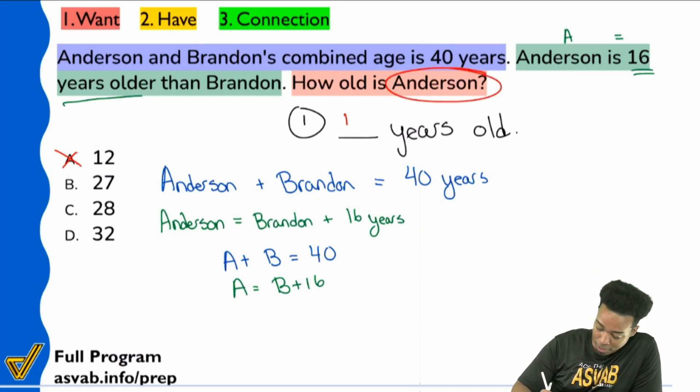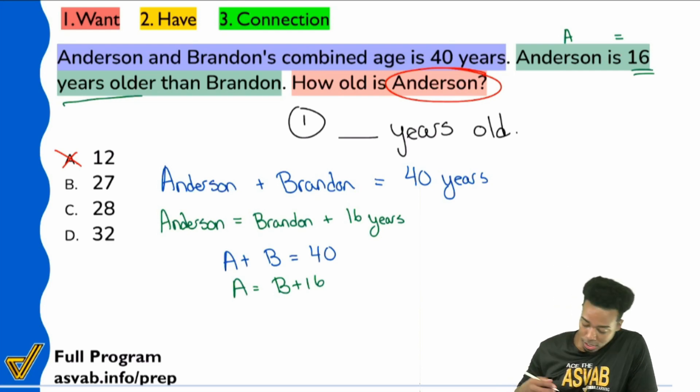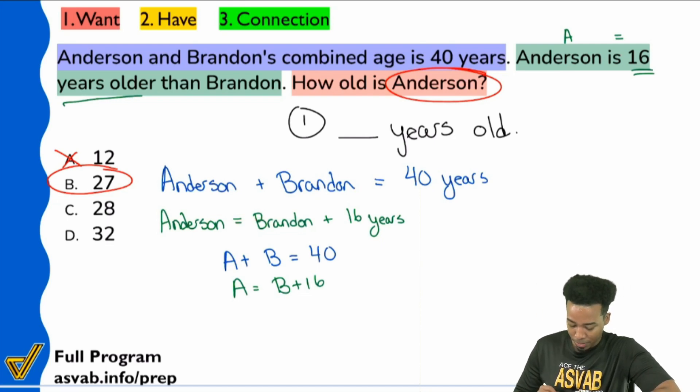Does everybody understand why A cannot be the answer? Because, again, this is Anderson's age. If Anderson was 12, that means Brandon is not alive at all. Next up, let's take a look at B. 27. Okay, guys. Let's assume that I'm 27. If I'm 27 and Brandon is 16 years younger than me, how old is Brandon technically? If I'm 27 and I'm 16 years older than Brandon, how old should Brandon be? What's 27 minus 16? Yeah, it's going to be 11.